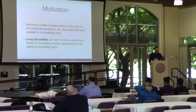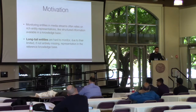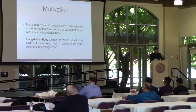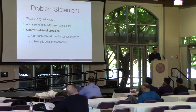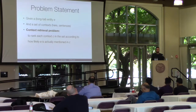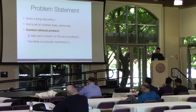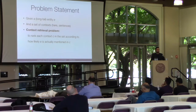Normally you would rely on entity linking techniques to find mentions of given entities, but here you need to do something different. The problem is: given an entity, we want to retrieve a set of contexts — in this case, contexts will be sentences. We want a ranked list of sentences that mention the entity and are highly relevant to that entity.